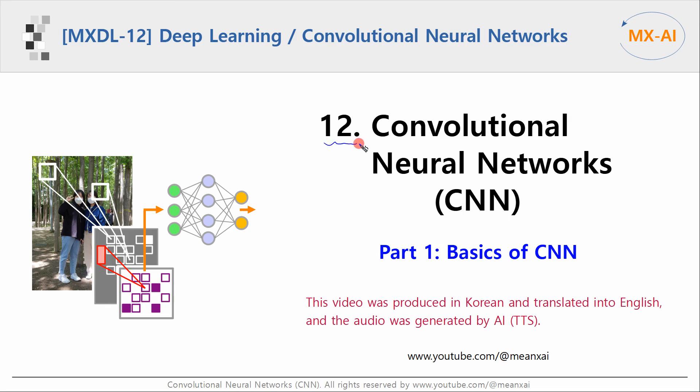In this series, we will look at convolutional neural networks, commonly referred to as CNNs. CNN is a specialized type of neural network designed to recognize images. It is widely used in computer vision tasks such as image classification, object detection, and image segmentation.